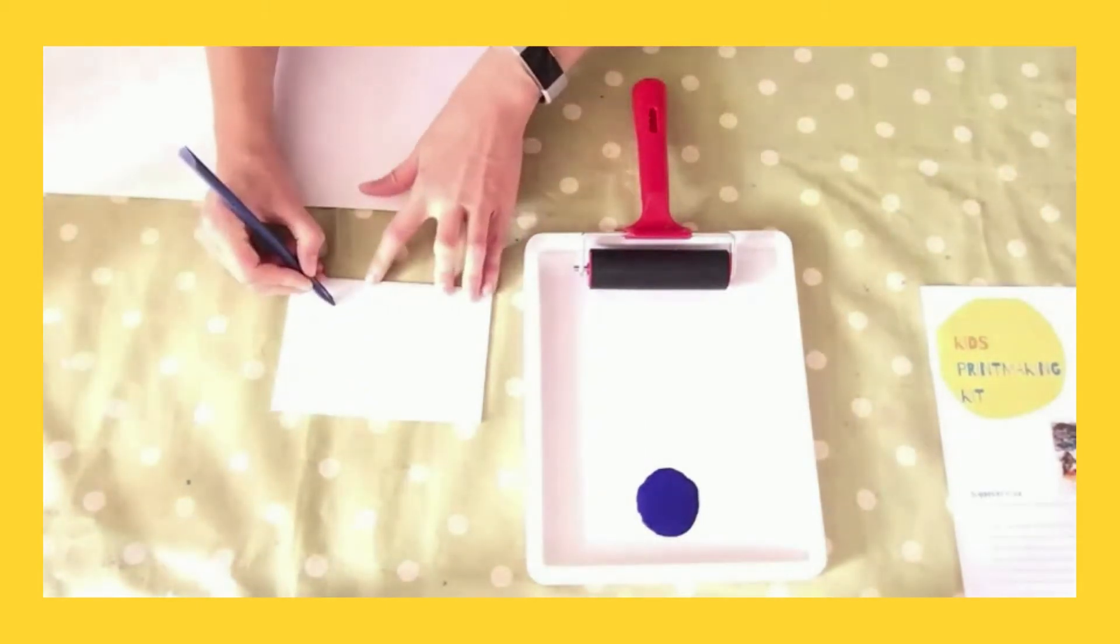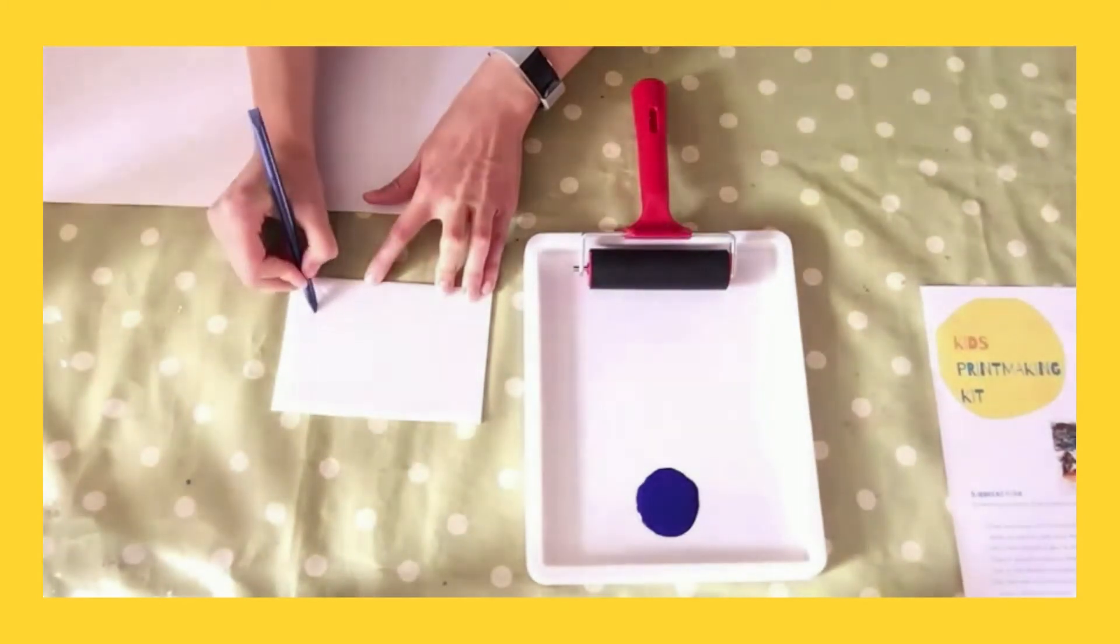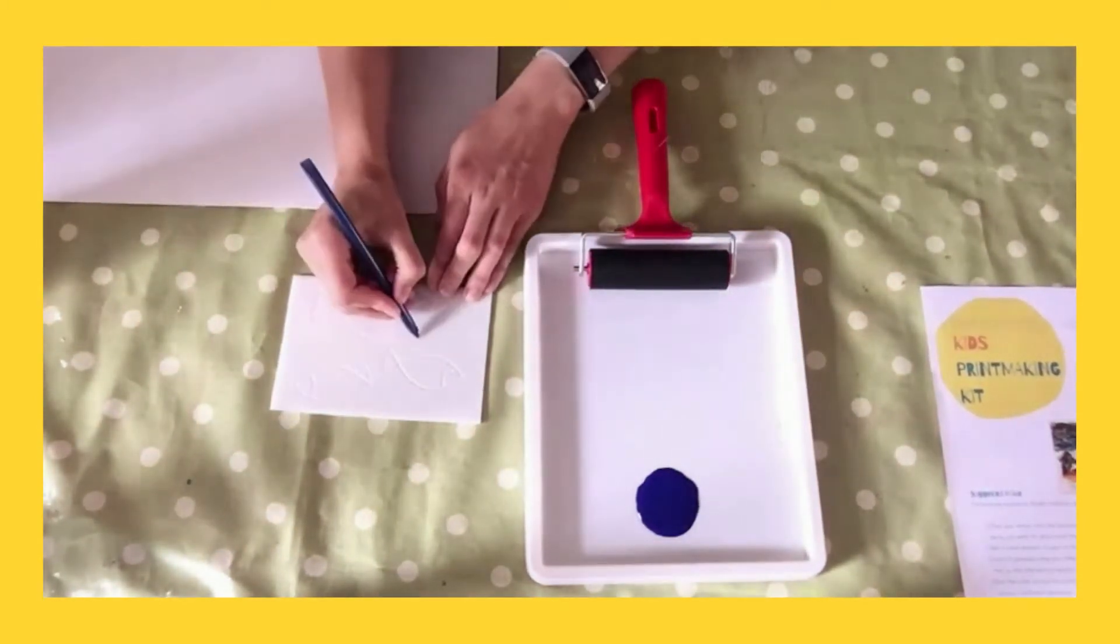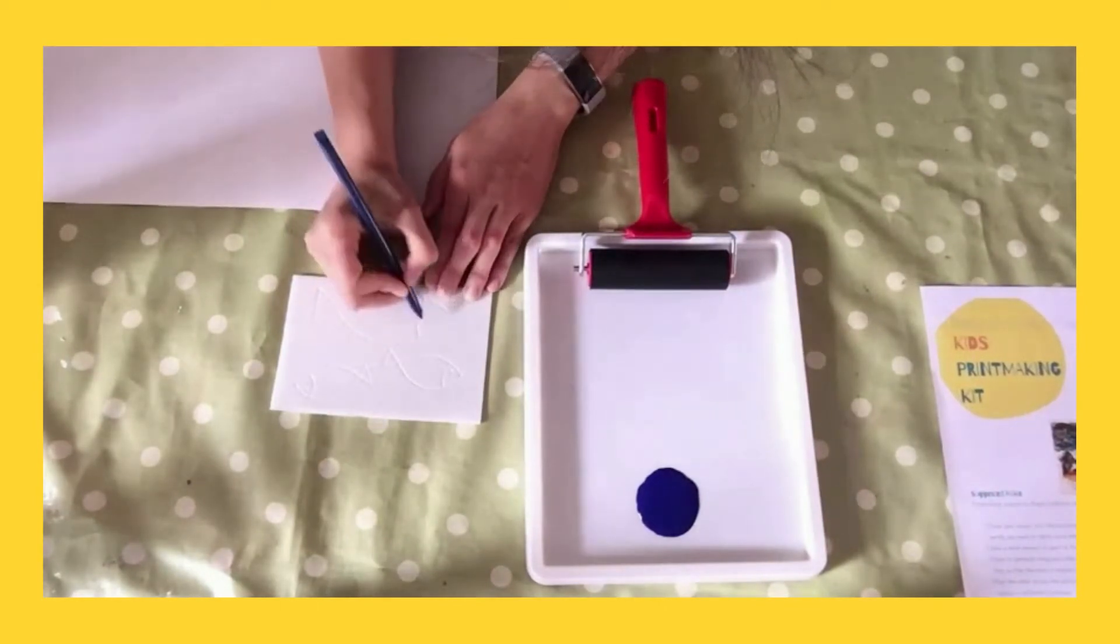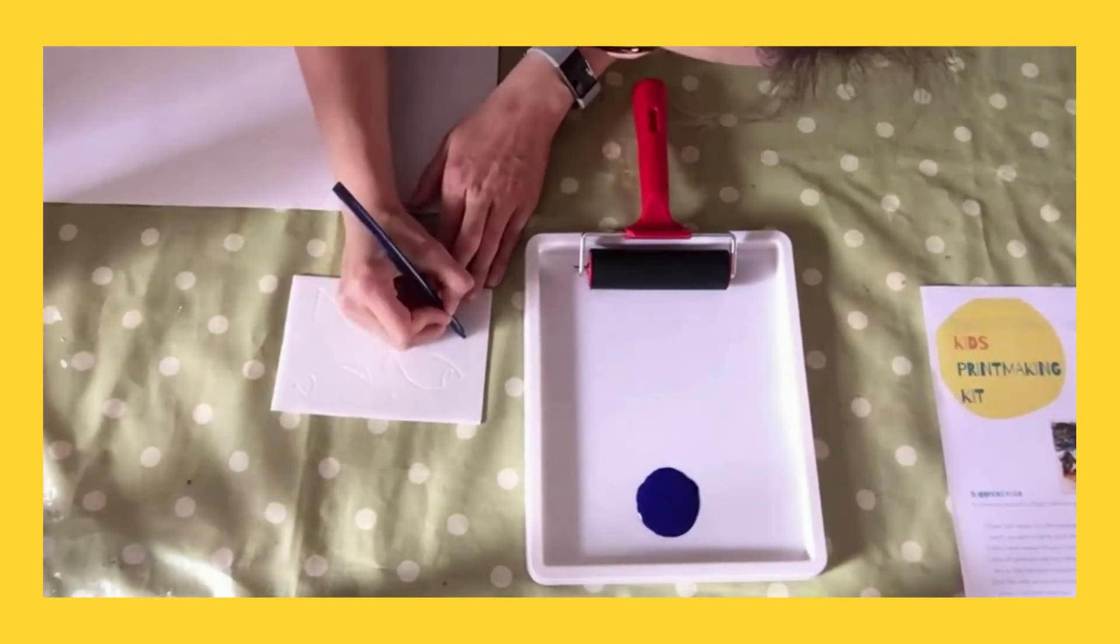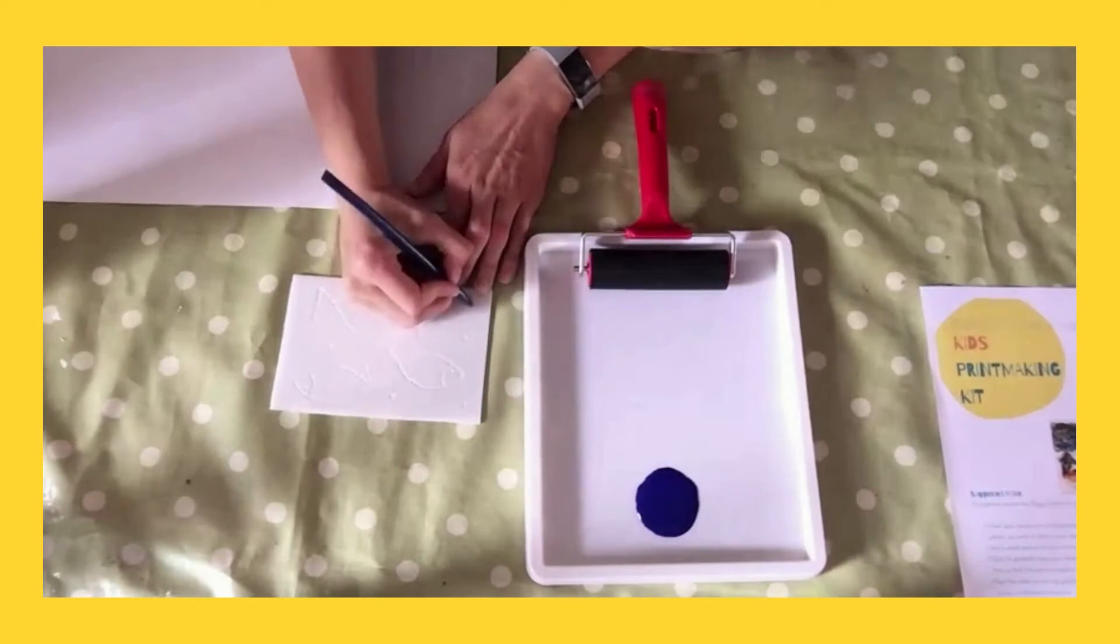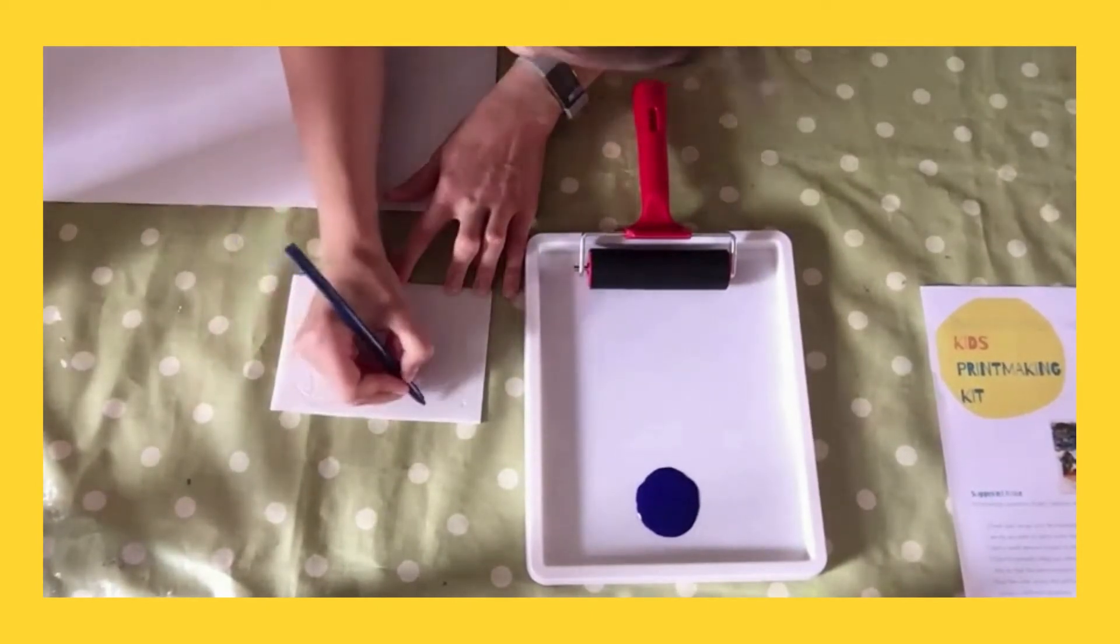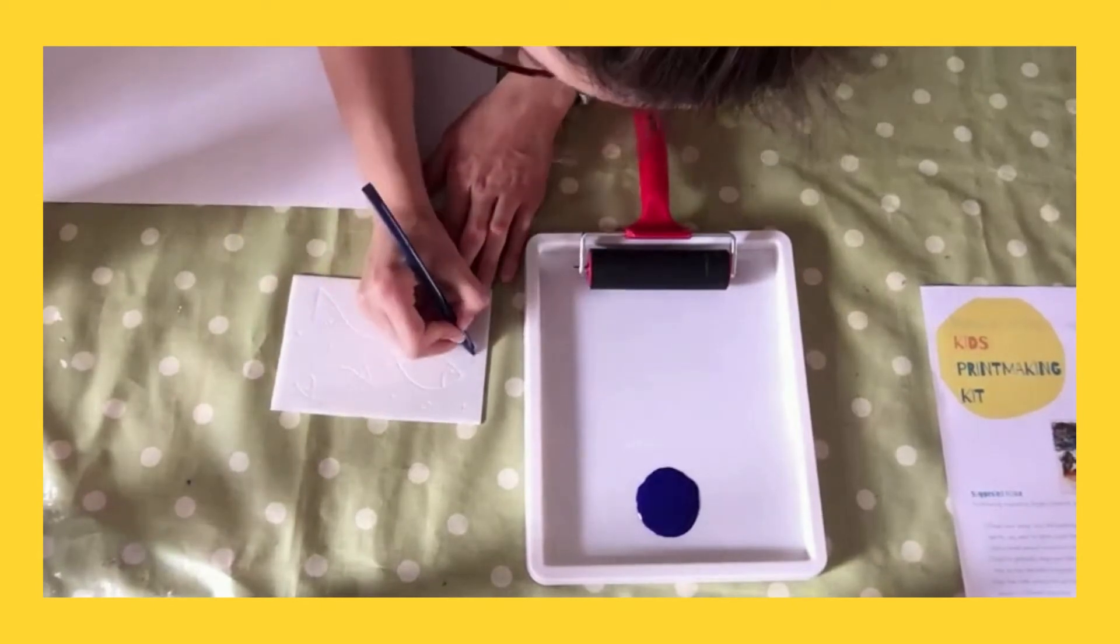So you might also want to use a pencil to plan your design first. So you could just draw your design, if you're not confident, onto the polystyrene sheet first. Okay, so I'm just going to add these extra bits there like bubbles. And fish.